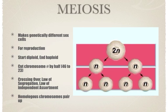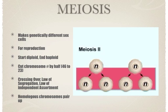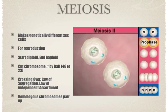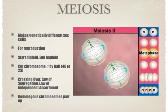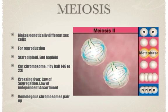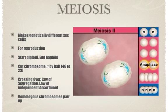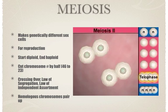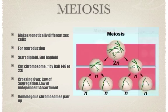Now the second round of nuclear division — meiosis two. Here are the two daughter cells that formed after meiosis one. During meiosis two, the centromeres of each chromosome divide, the chromatids separate and move toward opposite poles of the cell, and cytokinesis then divides the daughter cells. After two rounds of division, a diploid cell has split into four haploid cells.